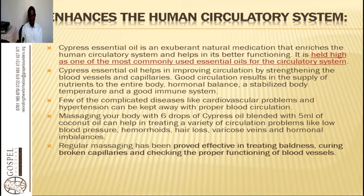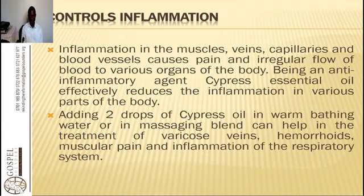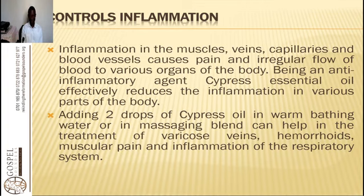You need to be exercising and drinking a lot of water for these complications. Cypress oil also controls inflammation. Inflammation in the muscles, veins, capillaries, and blood vessels causes pain and irregular flow of blood to various organs of the body. Being an anti-inflammatory agent, cypress essential oil effectively reduces inflammation in various parts of the body. Adding two drops of cypress oil in warm bathing water or in a massaging blend can help in the treatment of varicose veins, hemorrhoids, muscular pain, and inflammation of the respiratory system.